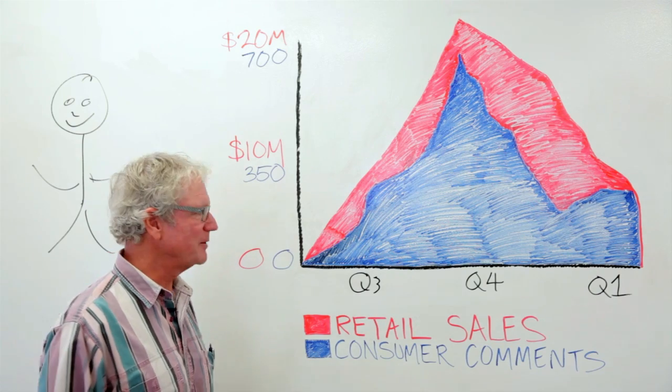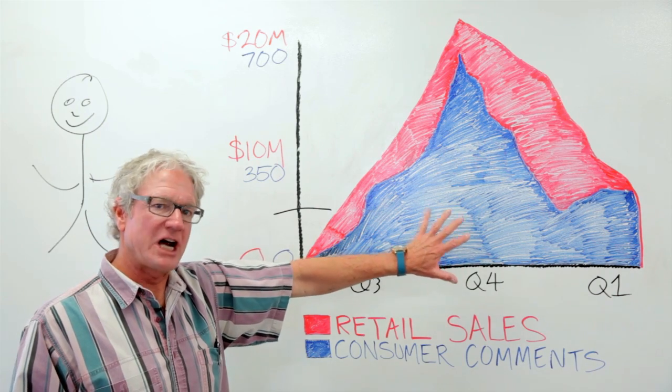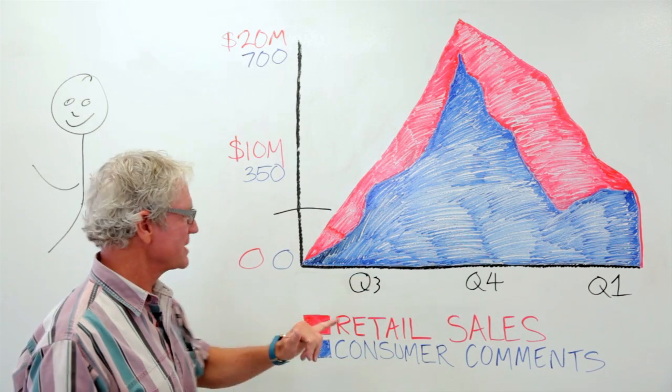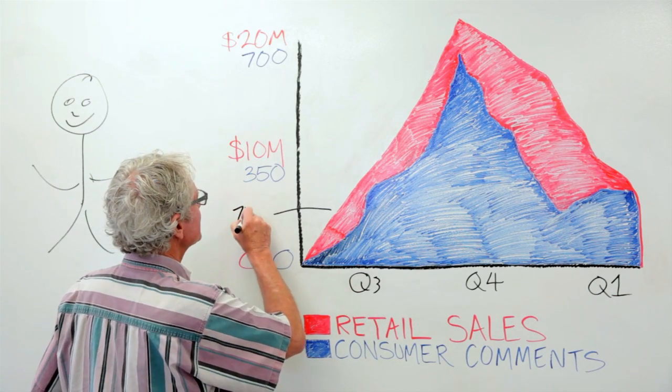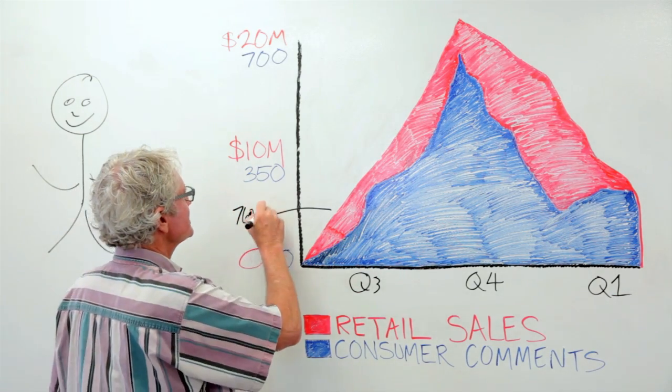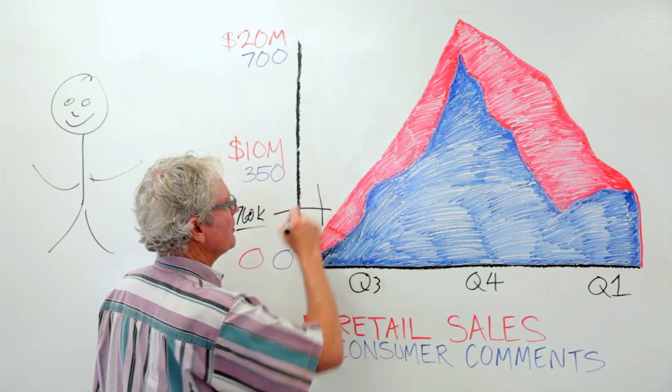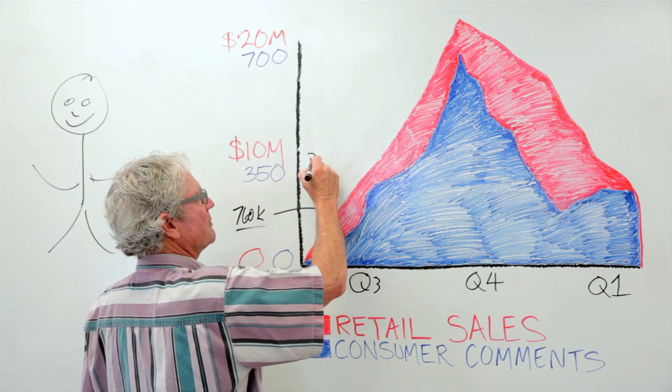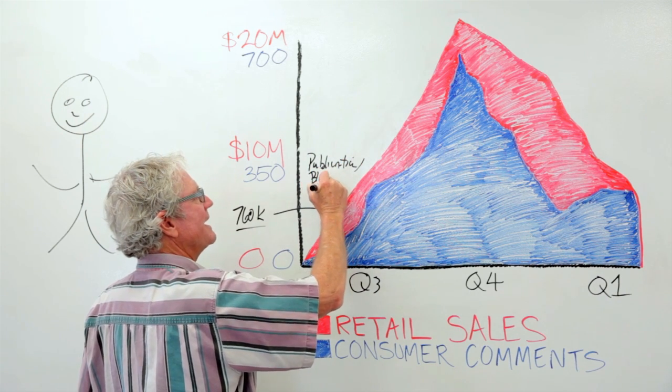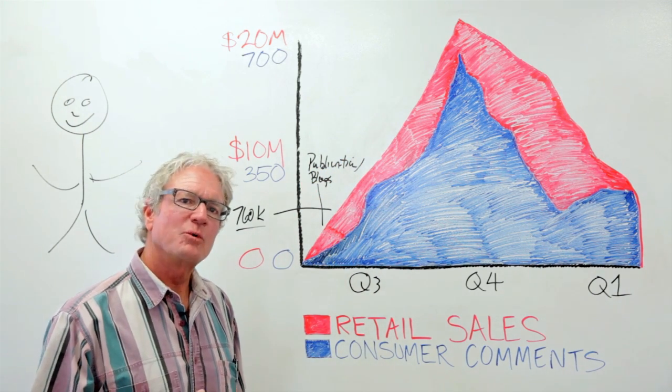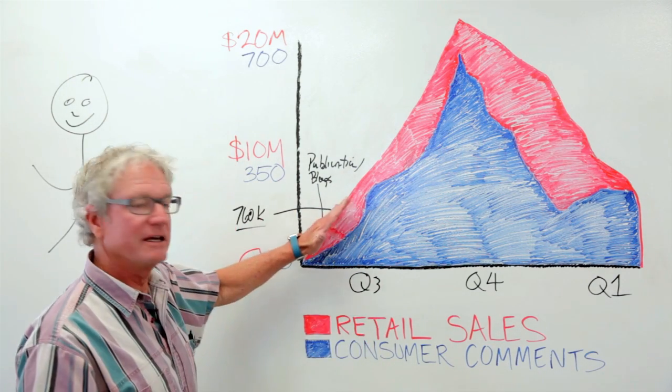Here in quarter 3, this is actually a technical jacket, just one jacket. It was introduced in July and at the end of quarter 3 they sold seven hundred and sixty thousand. But during that time they were working with publications, blogs, and their owned media about getting the word out right here.